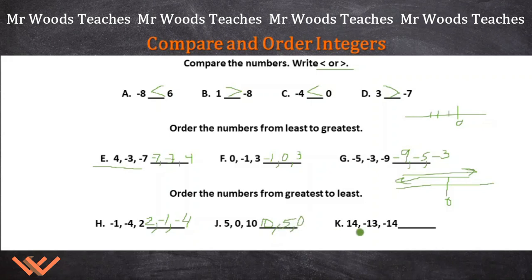And let's look at K here. 14, negative 13, negative 14. Remember, we're doing greatest to least. So what's the greatest number? Well, 14 is. And then when we're counting backwards along the number line to find the least, I'm going to hit negative 13 before negative 14. So it's going to be negative 13 and negative 14.